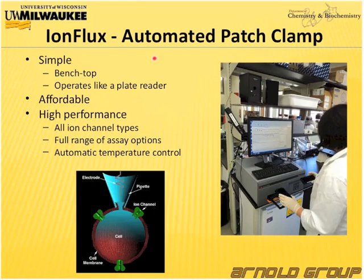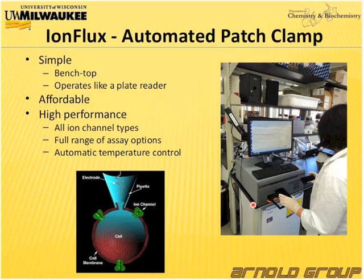For that purpose, we purchased the IonFlux, which is an automated patch clamp instrument, depicted in the picture here. It is a benchtop instrument that operates like a plate reader. Indeed, we are using multiple plates to carry out this assay. The instrument was affordable and gives us very high-performance data. I want to mention that this instrument is not only capable of assaying the GABA-A receptor, but all ion channels in general.